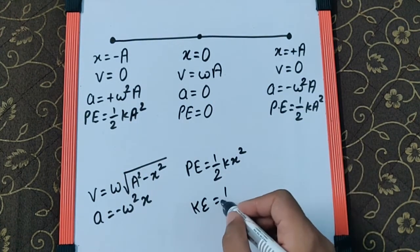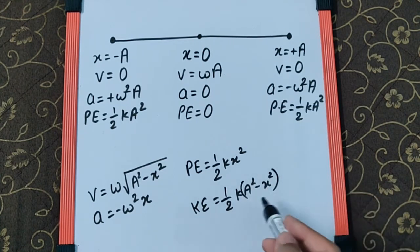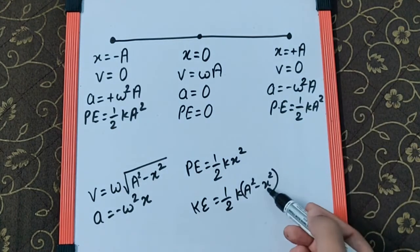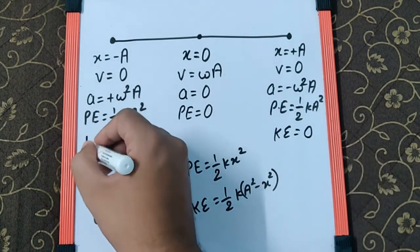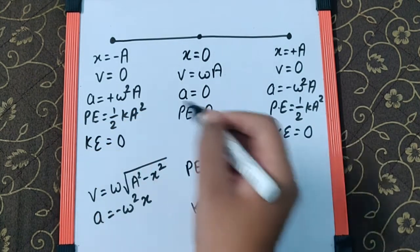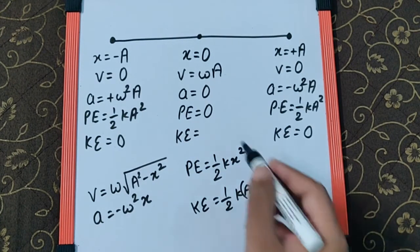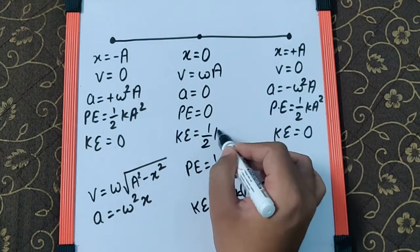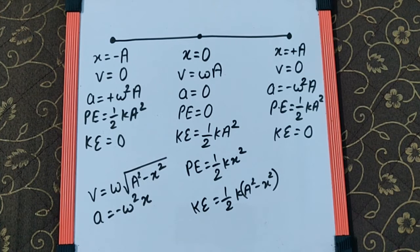For kinetic energy, the formula is ½k(a² - x²). If we put x = ±a, it becomes ½k(a² - a²) = 0, so kinetic energy at both extremes is zero. At the mean position (x = 0), kinetic energy is ½ka². This is very important information for directly using the values of displacement, velocity, acceleration, potential energy, and kinetic energy at the mean and extreme positions.